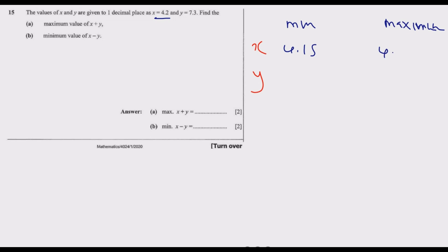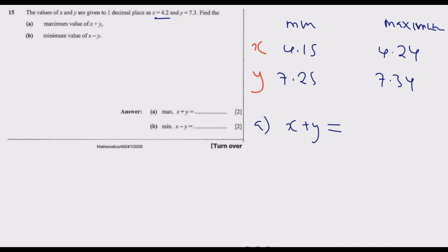Similarly, y takes a minimum of 7.25 and a maximum of 7.34. For part a), the maximum value of x plus y is found by adding the two maximums: 4.24 plus 7.34 equals 11.58. So the maximum value of x plus y is 11.58.